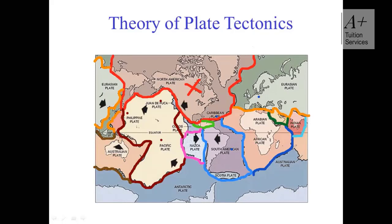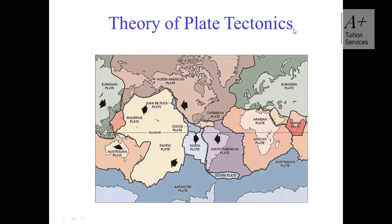The Australian plate covers Australia and is right below Africa. The Antarctic plate spans the entire region at the bottom. So these are the different plate boundaries. Now this lesson is basically teaching us the different types of plate boundaries. There are three types we're going to look at: they are constructive, destructive, and passive or transform.